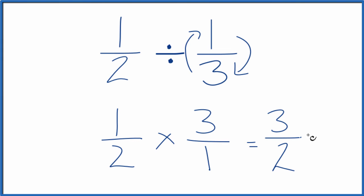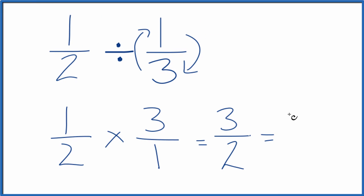This is an improper fraction. You could change this to a mixed fraction. Two goes into three one time with one left over, so we call it one and one-half. So we divided one-half by one-third and we got either three halves or one and one-half.